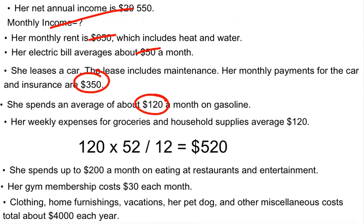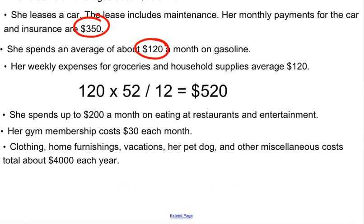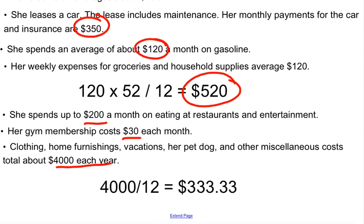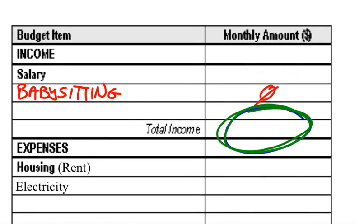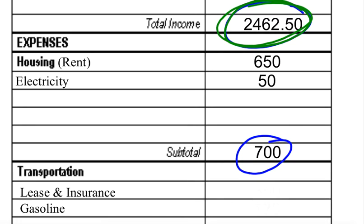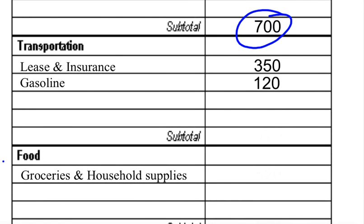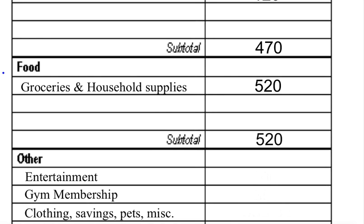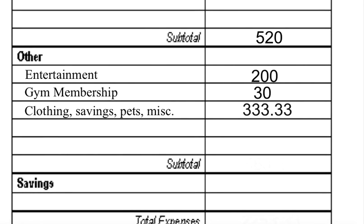We've got groceries at $520 per month, then $200 per month, $30 per month, and approximately $4,000 per year for other expenses. Dividing that $4,000 annual amount by 12 gives us our monthly bill. Filling everything into the chart: lease and gas for the car total $470, groceries $520, and other expenses are $230 plus $333.33, totaling $563.33.